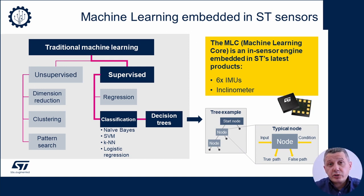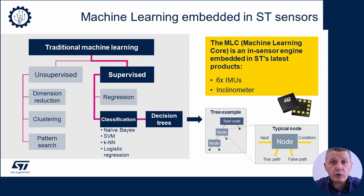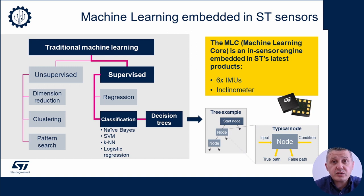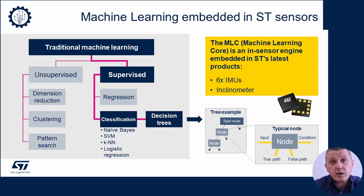Talking about traditional machine learning solutions, we have a wide variety of models, each with pros and cons. We will focus our attention on one called Decision Tree, for two main reasons. First, it is very simple to understand and will help us go through all the key steps of a machine learning model design. Second, it is the model used in the hardware engine present in our latest family of motion MEMS, called Machine Learning Core.